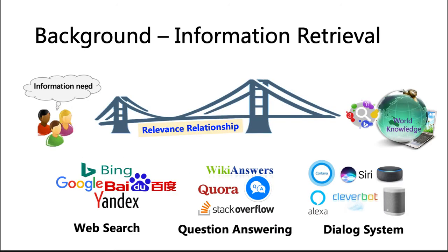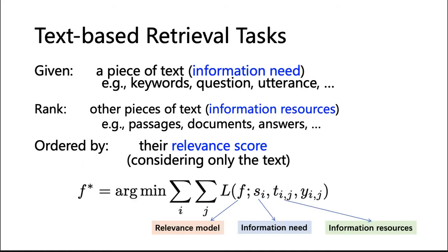As we all know, Information Retrieval has already become a daily activity for us to obtain knowledge. The core of Information Retrieval systems is to model the relevance relationship between users' information need and documents from worldwide knowledge. Here, we focus on the text-based ranking task as it is the most widely used search system.